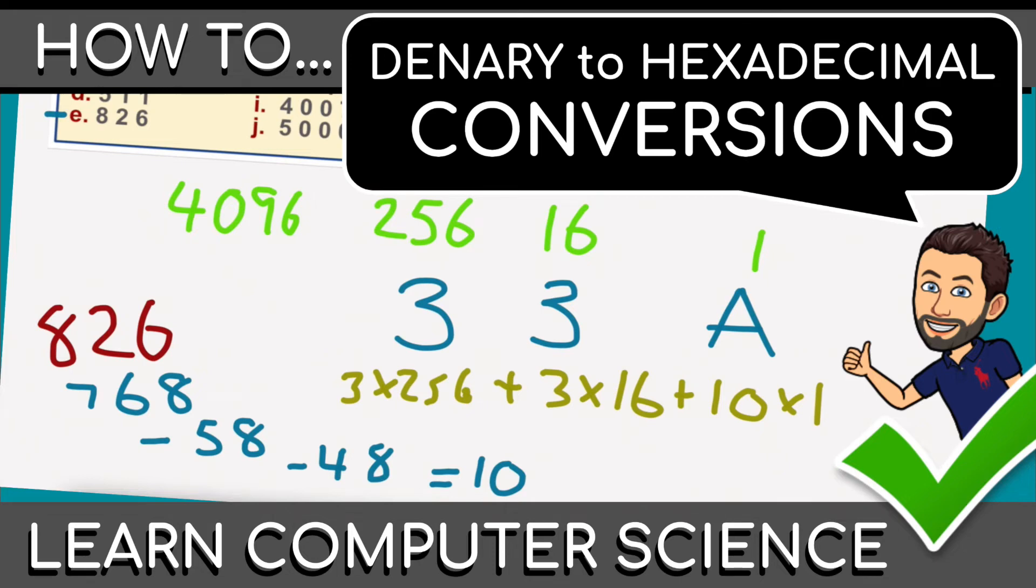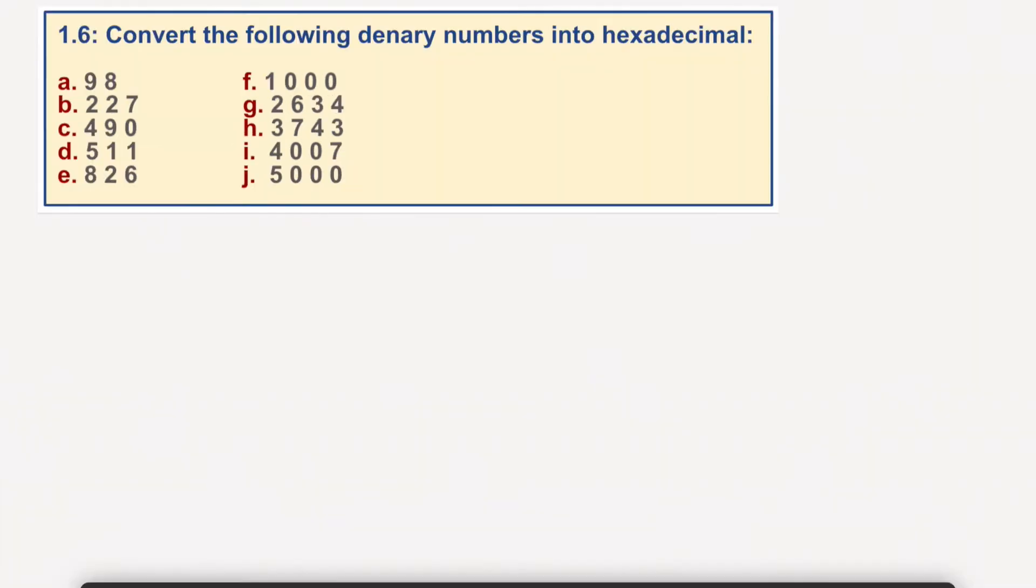Converting the following denary numbers into hexadecimal. What I'm going to do with this, I'm going to start with A.